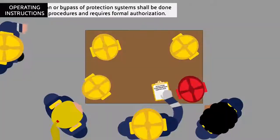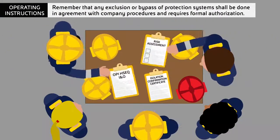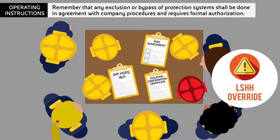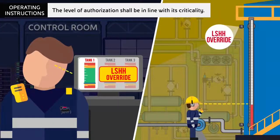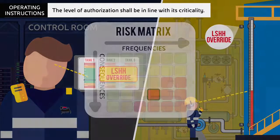Remember that any exclusion or bypass of protection systems shall be done in agreement with company procedures and requires formal authorization. The level of authorization shall be in line with its criticality.